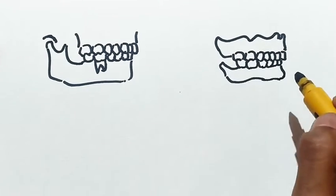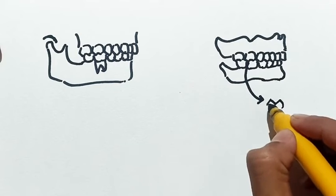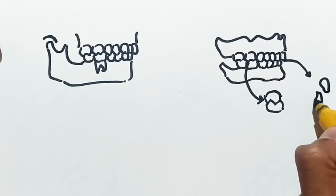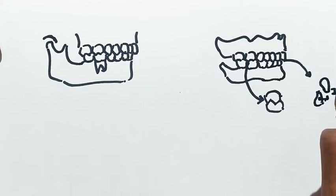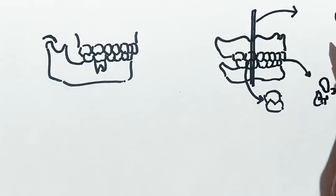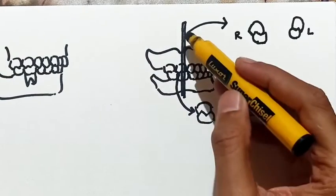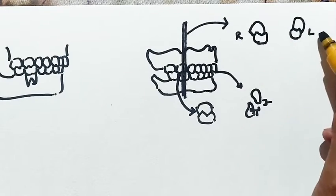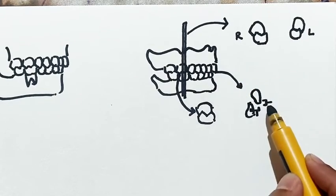In centric occlusion, all the posterior teeth are in occlusion and there is overjet and overbite in anterior teeth. In coronal or frontal view, all the posterior teeth are in contact. So there is balance in the denture and no rocking of any denture is there. Our denture is stable.